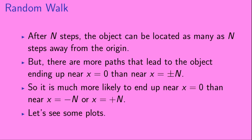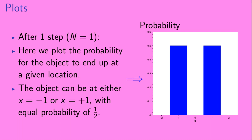After n steps, the object can be located as many as n steps away from its origin. But there are more paths that lead to the object ending up near x equals zero than there are for the object ending up near x equals plus or minus n. So it is much more likely for the object to end up near x equals zero than near x equals minus n or x equals plus n. Let's take a look at some plots. First, for n equals one, we plot the probability for the object to end up at a given location. The object can be at either x equals minus one or x equals plus one with equal probability of one-half.